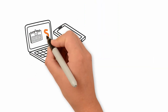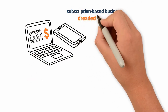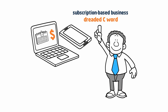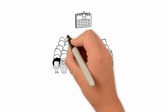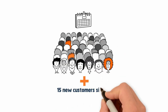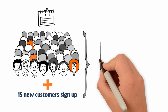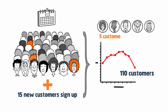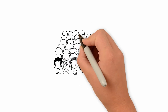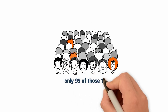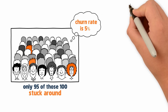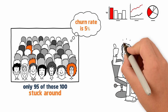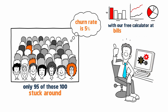If you're already running a subscription-based business, then the dreaded C-word needs little introduction. Churn is when customers leave your product. So if at the start of the month you have 100 customers and 15 new customers sign up, but at the end of the month you only have 110 customers, that means 5 customers have churned. Because you had 100 customers at the start of the month and only 95 of those 100 stuck around, your churn rate is 5%. You can calculate how churn will affect the growth of your business with our free calculator at billsby.co/growth.